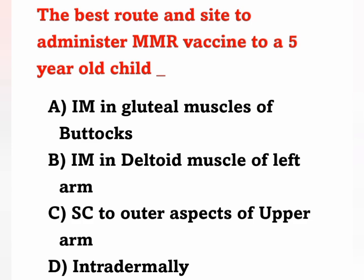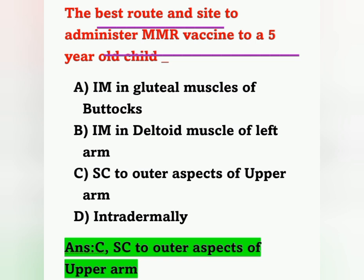The next question: The best route and site to administer MMR vaccine to a 5-year-old child. Options: A) IM in gluteal muscles of buttocks, B) IM in deltoid muscles of left arm, C) Subcutaneous to outer aspect of upper arm, D) Intradermally. For a 5-year-old child, the best route and site to administer MMR is subcutaneous to the outer aspect of the upper arm. Option C is the correct answer.